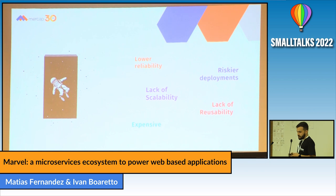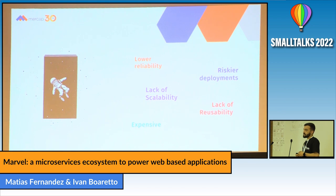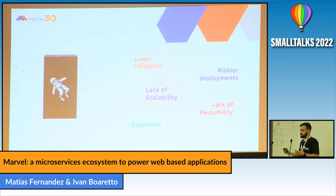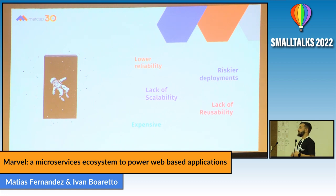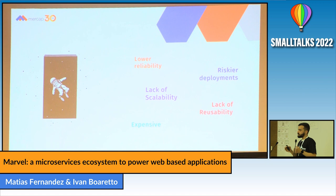Another disadvantage we found was riskier deployments, because when you're deploying the whole application, if you introduce a bug in one module, you will probably have to go back or release a new version to patch that bug — meaning a whole new version for the whole system, not just that module. We also found a lack of reusability: when we had databases sitting on a client's premise, we couldn't reuse that data across other products or clients.